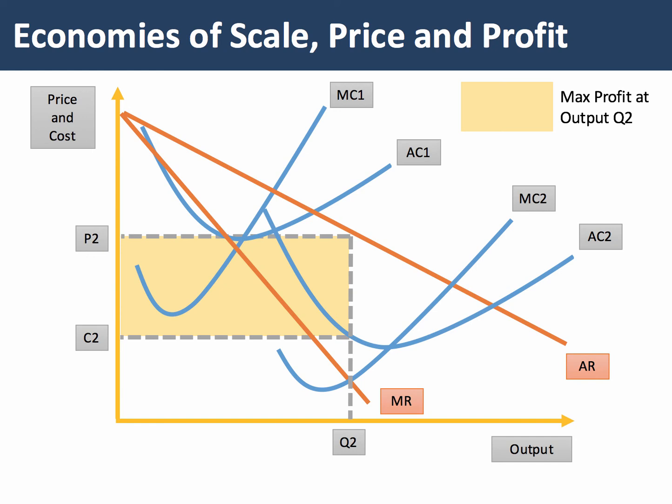So economies of scale allow firms to reduce their price and make higher profits. The level of profit beforehand was shown in green, and now the level of profit at Q2 is much higher despite the firm reducing their price. The scale of production is much bigger, the unit cost is significantly lower, so therefore the firm can make higher profits.